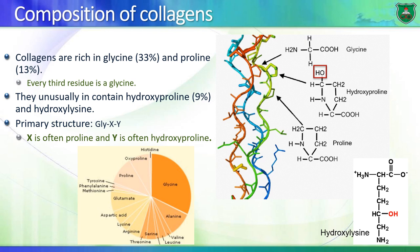Now let's zoom into the molecule and talk about the amino acids that determine the conformation and structure of the collagen molecule. What characterizes collagen is that it is rich in glycine — one third of all amino acids in collagen is glycine. This is really large. Remember, glycine is the smallest amino acid; it has an R chain that is only a proton.